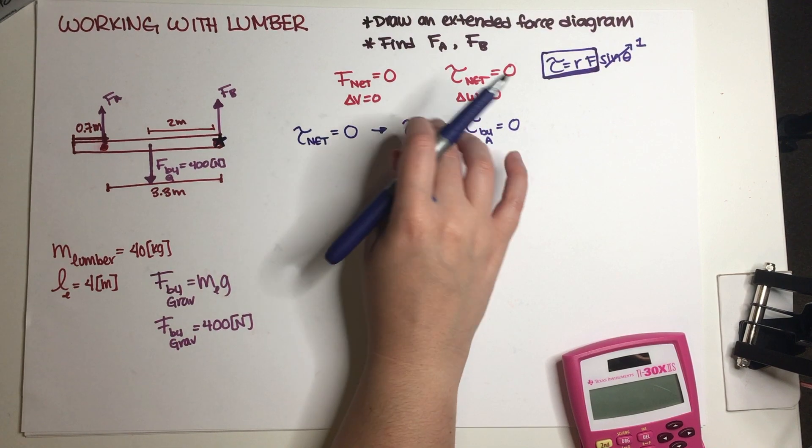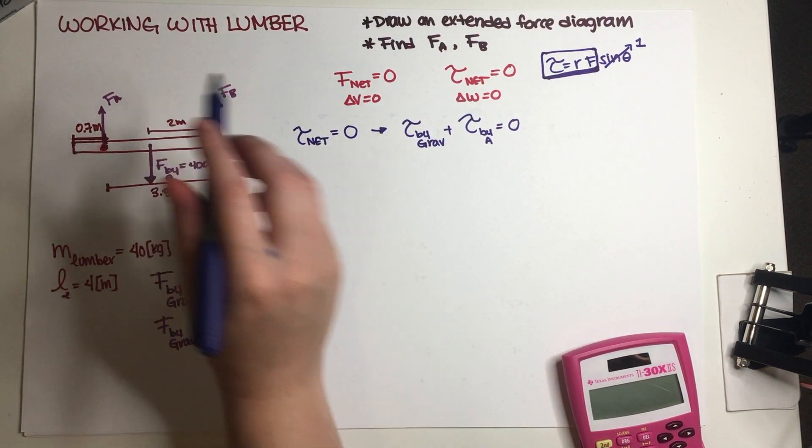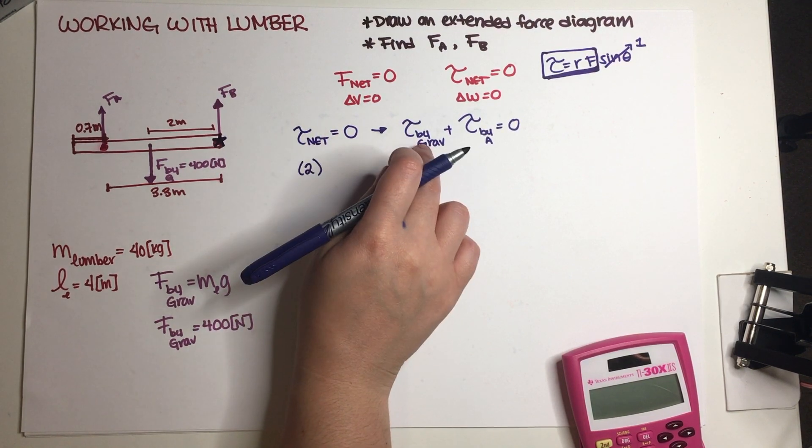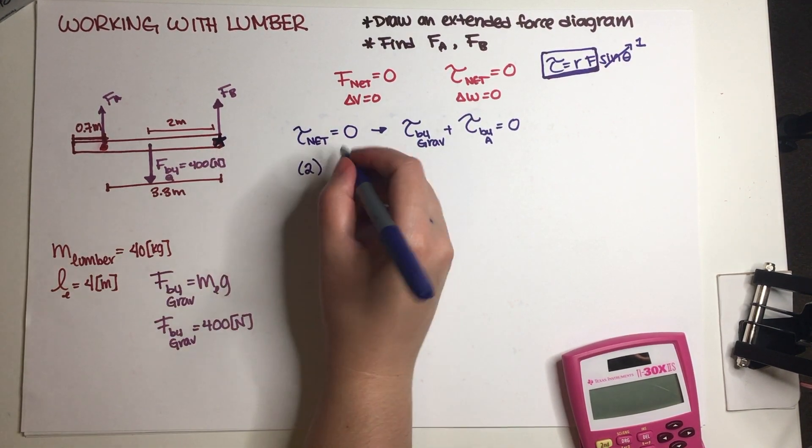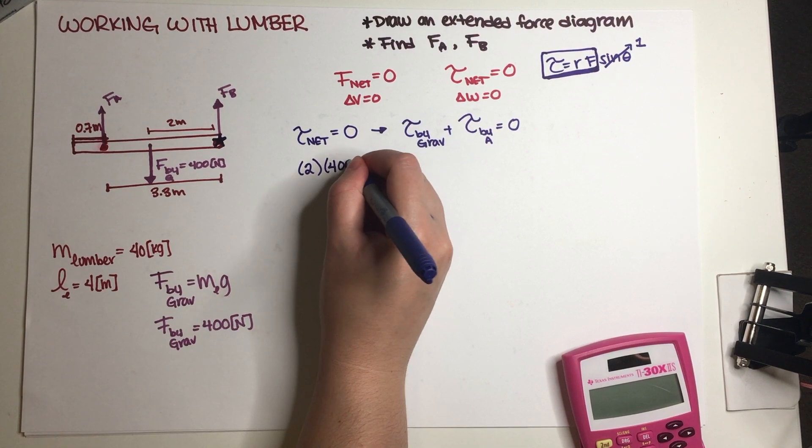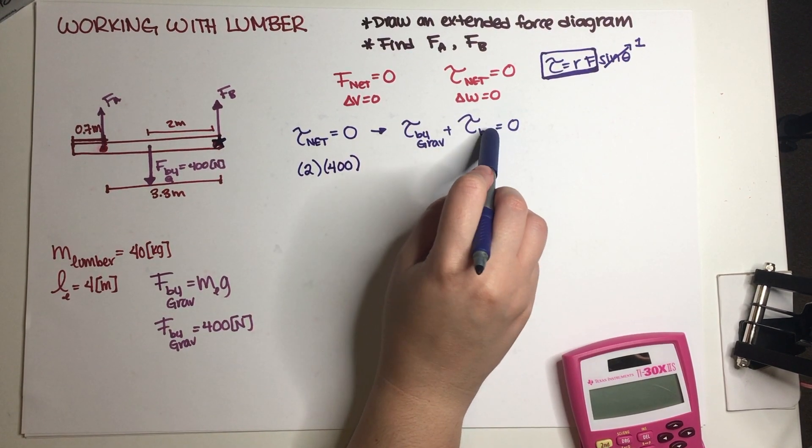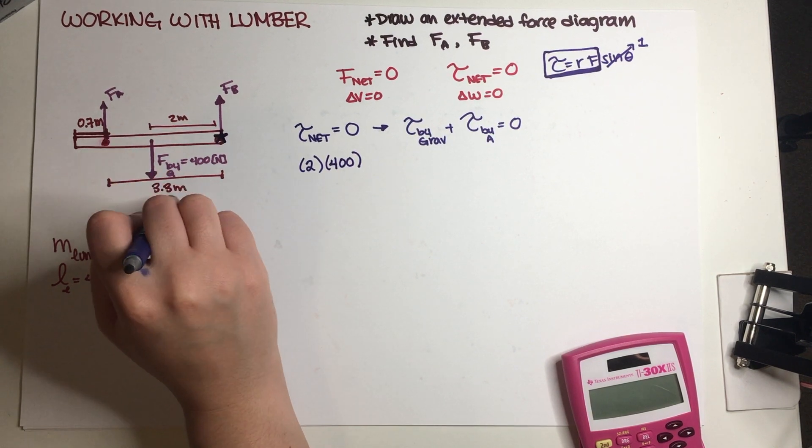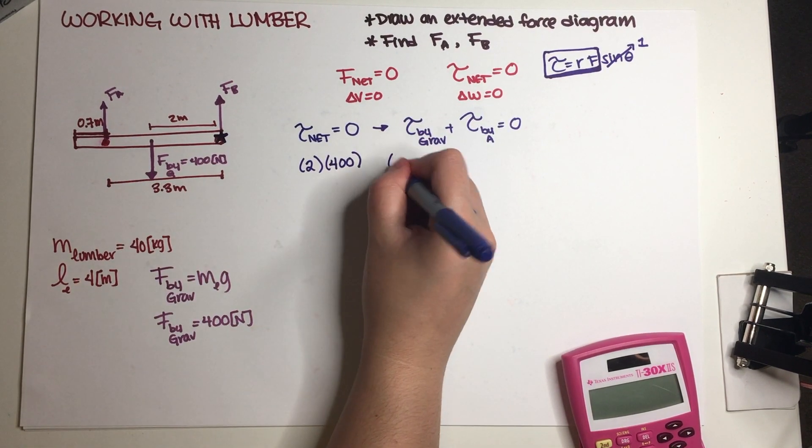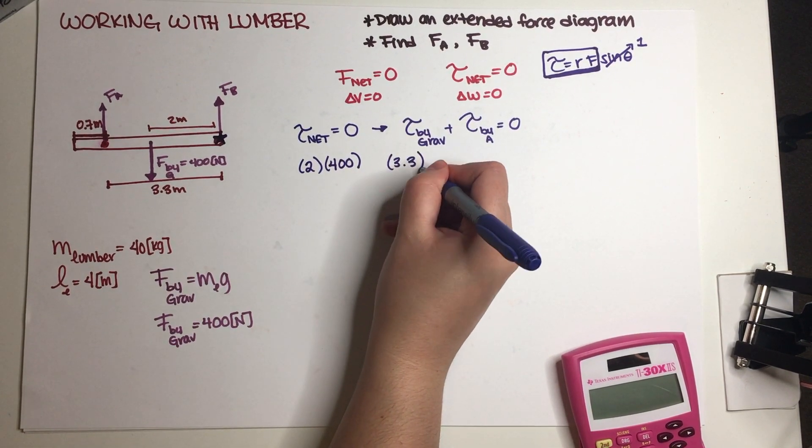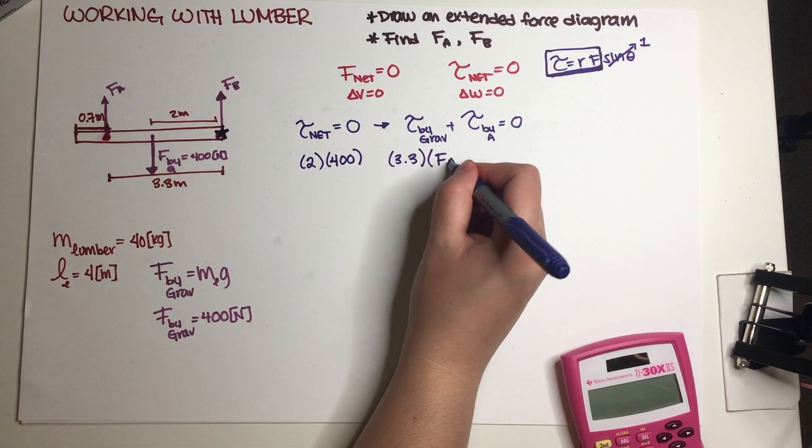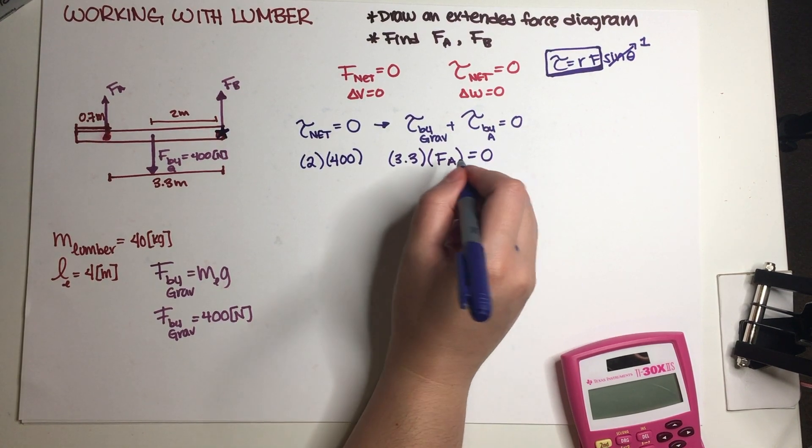So torque by gravity is distance from pivot to gravity which is 2 meters, and then times force by gravity which is 400 newtons. Torque by lumberjack A is distance from pivot point to lumberjack A which is 3.3 meters, and then the force by lumberjack A is actually the thing that we don't know. And this has to be equal to zero.